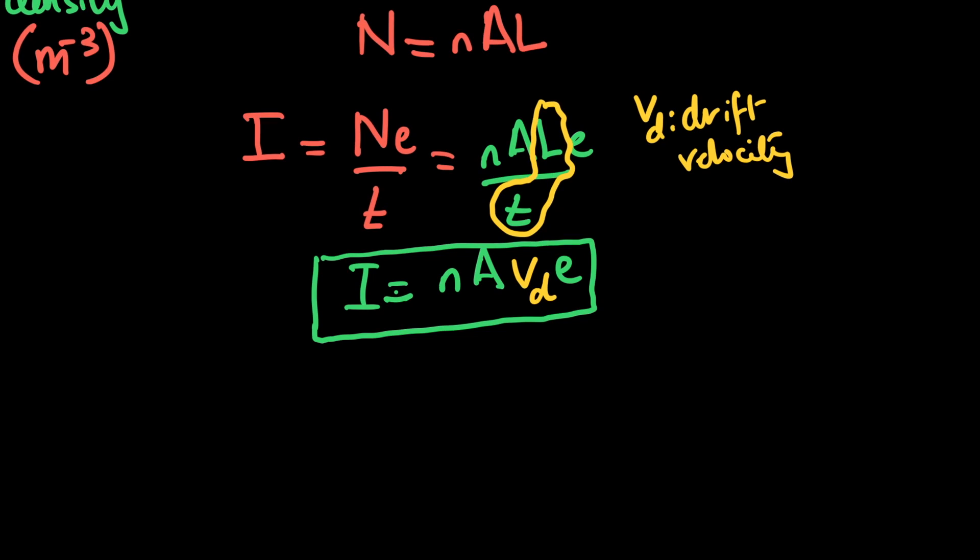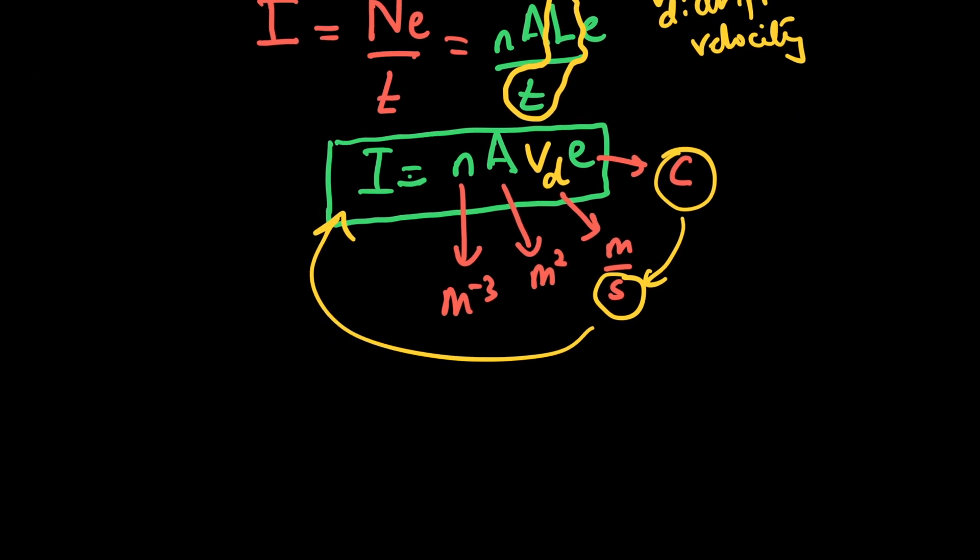Vd stands for drift velocity, the speed with which the electron is drifting towards the positive terminal. And e is the charge unit of the electron itself. Very important formula: I equals n into A into Vd into e. Vd is drift velocity. Please try to remember the final equation. N's unit is m minus 3, area's unit is meter square, Vd will be obviously meter per second, and e is the charge on the electron in coulombs.